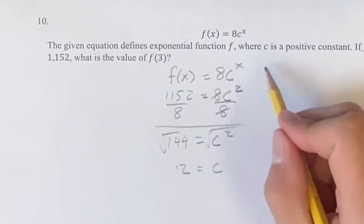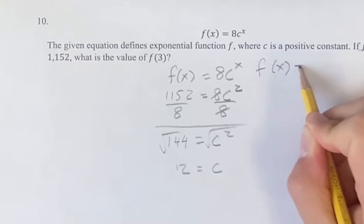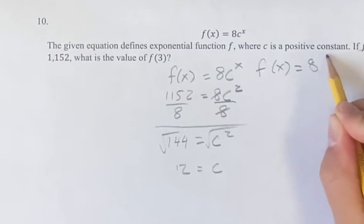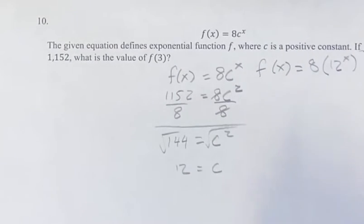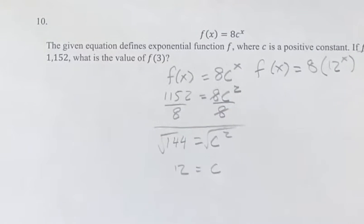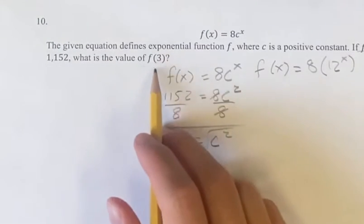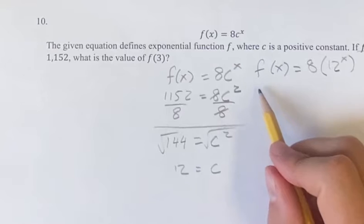And now that we know c, like I said, we can plug it back in. So we have f(x) is equal to 8 times 12 to the x. Now we just have a one variable equation, and we know that we have to plug in 3 for that variable. And we can just find f(3).